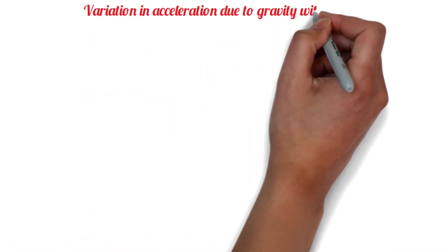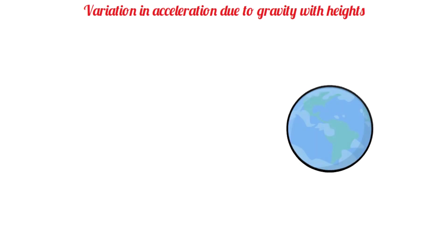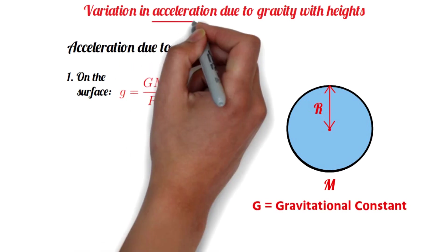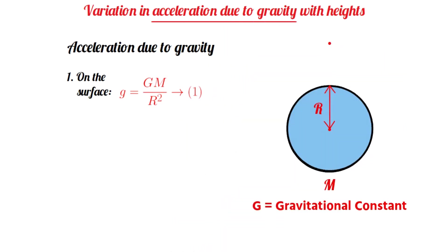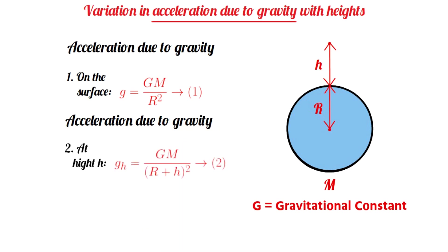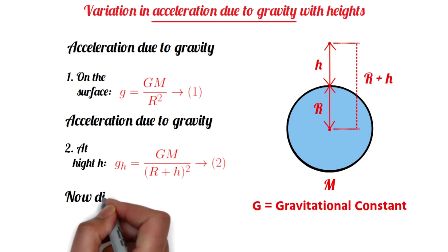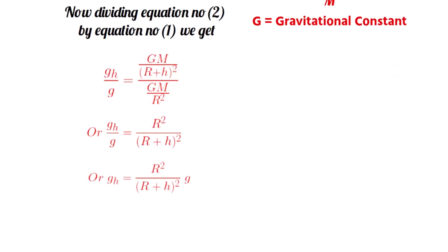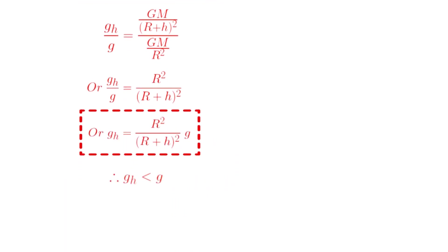Variation in acceleration due to gravity with heights. Let the Earth be a sphere of radius R and mass M. We know the acceleration due to gravity on the surface of the Earth is g is equal to GM by R square. We will determine the formula for the acceleration due to gravity at a point above the surface of the Earth. Consider any point at the height h above the surface of the Earth. The acceleration due to gravity at that point is g_h is equal to GM by (R plus h) whole square. Now dividing equation number 2 by equation number 1, we get g_h is equal to R square divided by (R plus h) whole square into g.